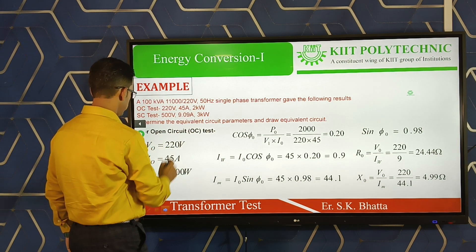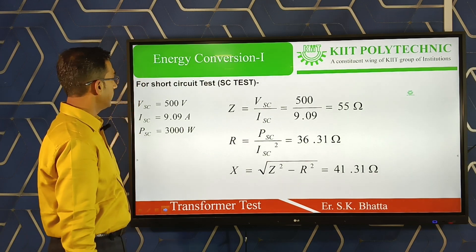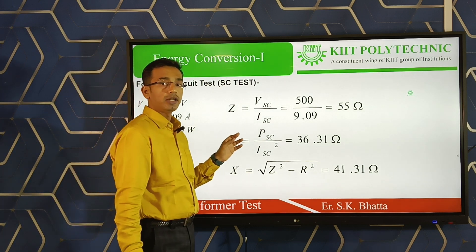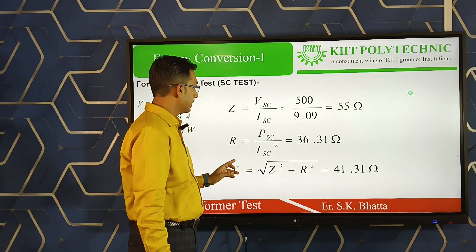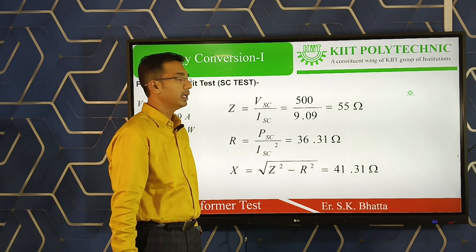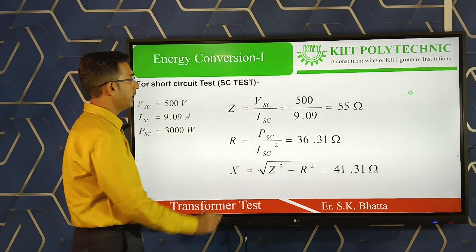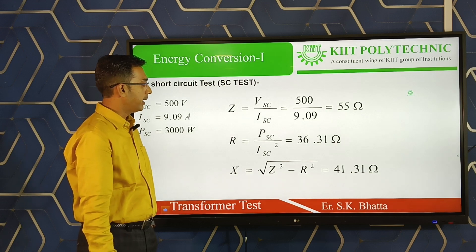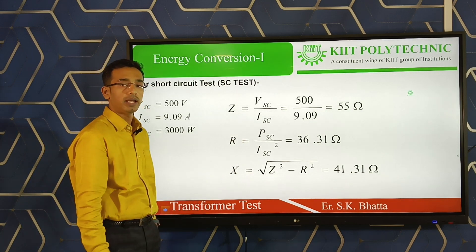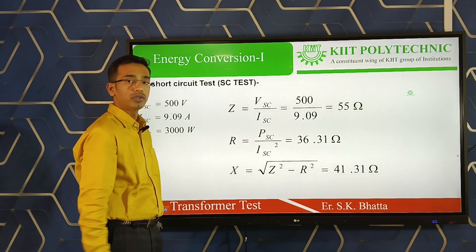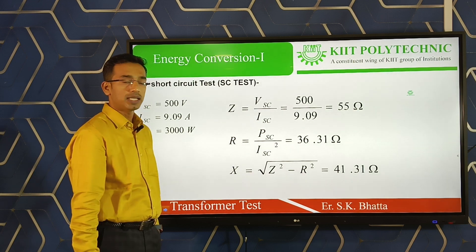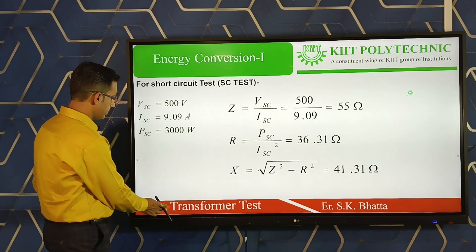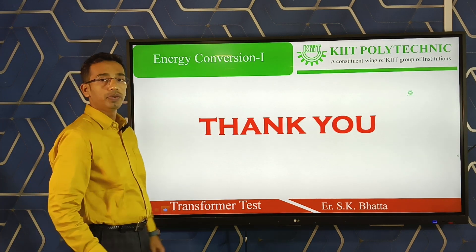From the short circuit test, voltage Vsc = 500 V, current Isc = 9.09 A, and power Wsc is given. The equivalent impedance Zeq = Vsc / Isc = 500 / 9.09 = 55 Ω. The equivalent resistance Req = Wsc / Isc² = 36.31 Ω. The equivalent reactance Xeq = √(Zeq² − Req²) = 41.31 Ω. This completes the example. Hope you understand — thank you.